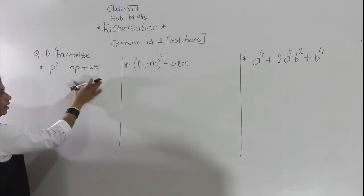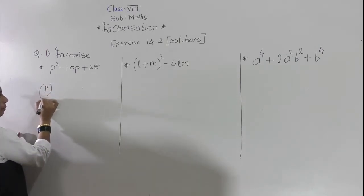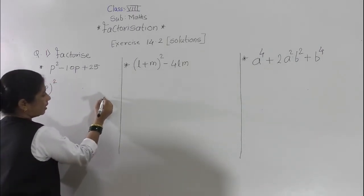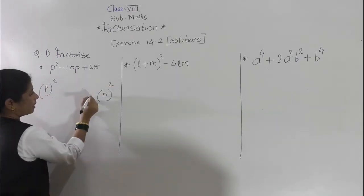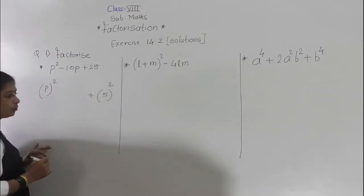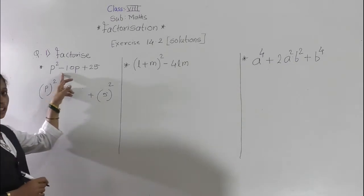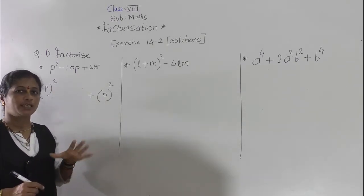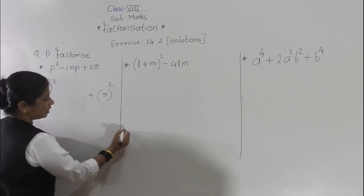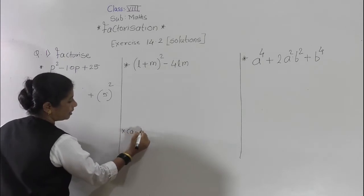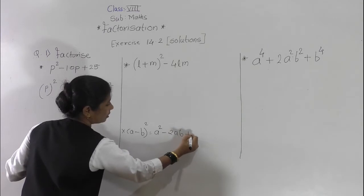As we have learnt, we have to find out the perfect square number. This p squared is the square of p. Then 25 is the square of 5 — 5 squared is 25. The middle sign is negative, so which identity form will come? It will be the (a minus b) bracket squared identity.